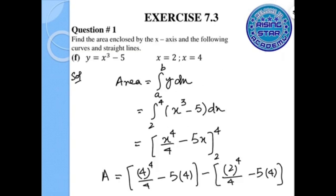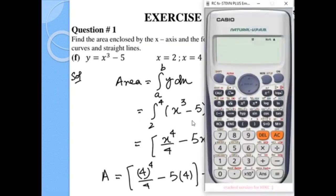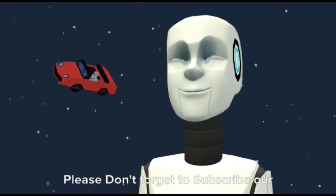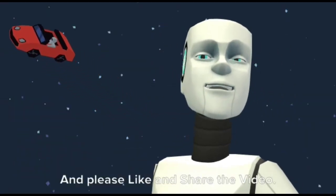We use the calculator to verify: entering the integral of x to the power of 3 minus 5, with lower limit 2 and upper limit 4, we get the same answer: 50. Please don't forget to subscribe to our channel, and please like and share the video. Thank you.